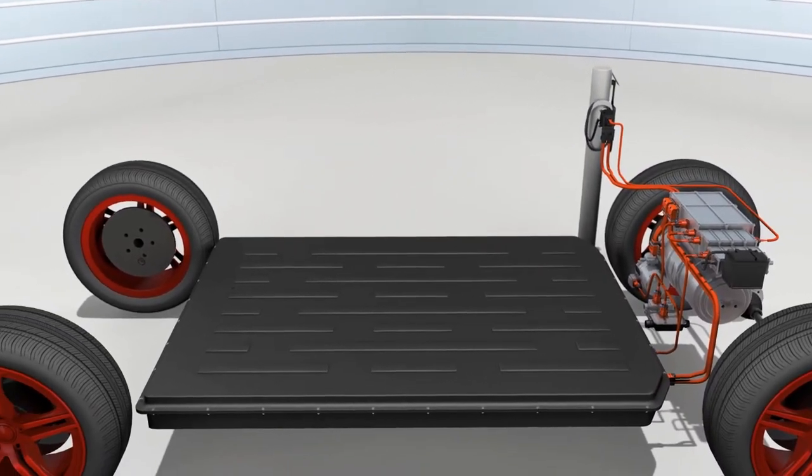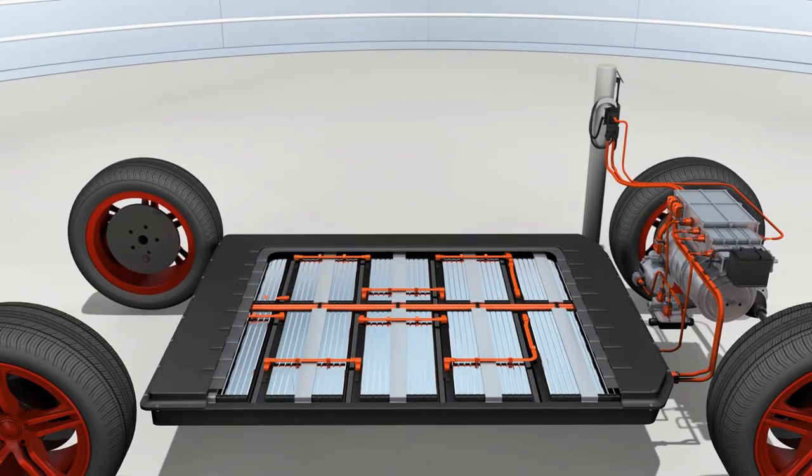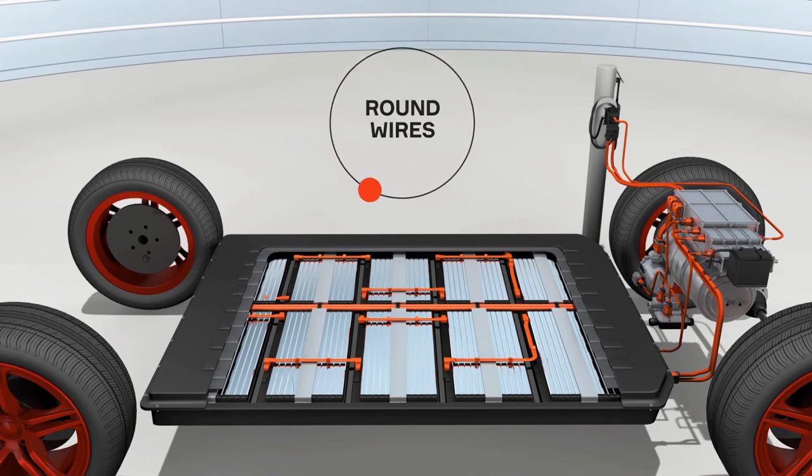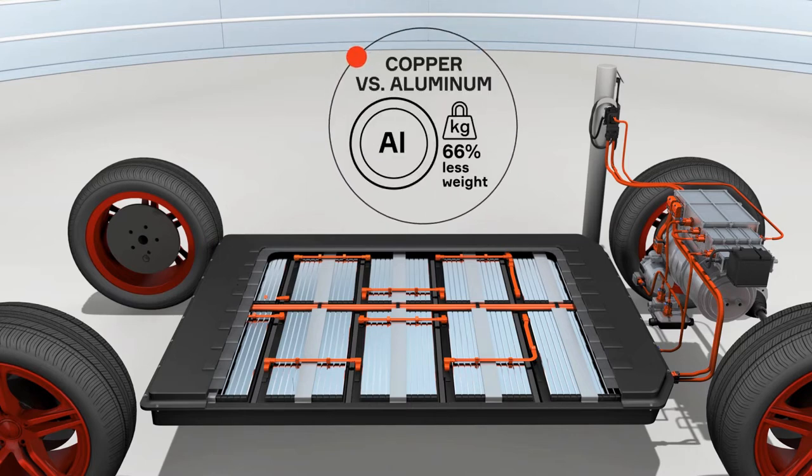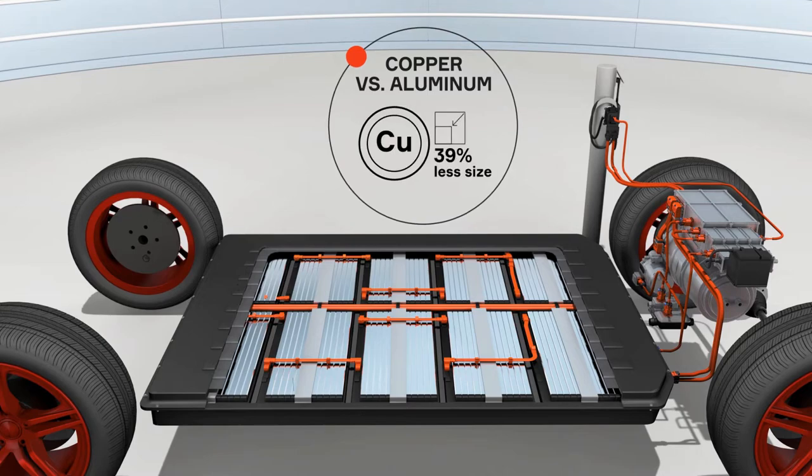Take a closer look inside an electric vehicle battery pack, and you'll find Aptiv everywhere. Between our round wires and our bus bars, we can make our conductors out of aluminium to reduce mass, or copper to reduce size.